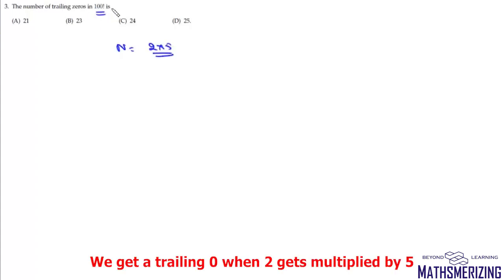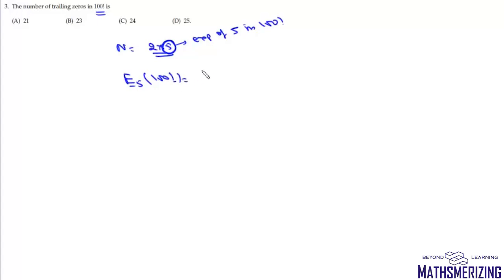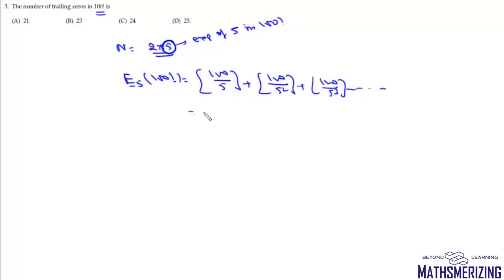Question 3 asks for trailing zeros in 100!. Trailing zeros are determined by the exponent of 5 in 100!. Using Legendre's formula: ⌊100/5⌋ + ⌊100/25⌋ + ⌊100/125⌋ + ... = 20 + 4 + 0 = 24. So the total number of trailing zeros in 100! is 24. That's option C.